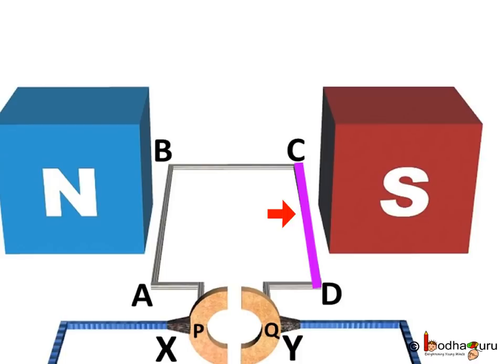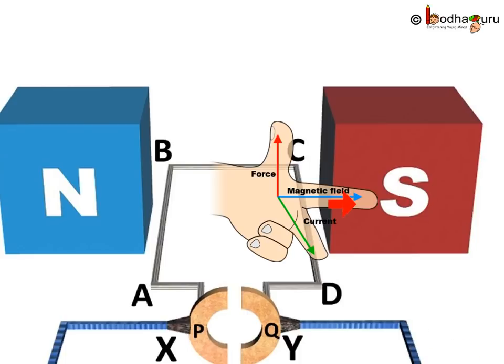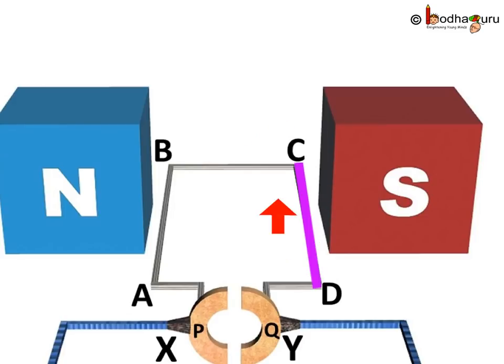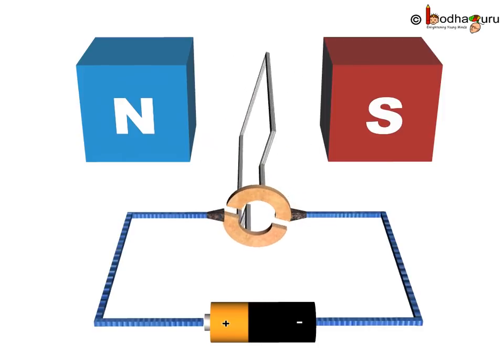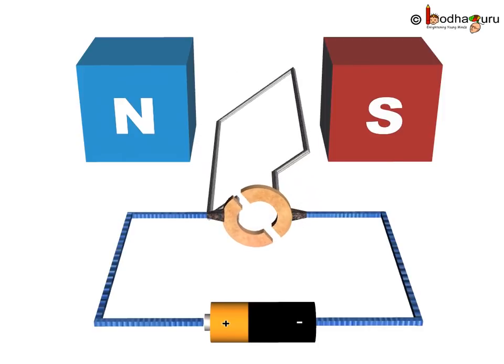Now, coming to arm CD. Look, the index finger points to the magnetic field direction which is north to south pole. The middle finger points to the current direction in the arm CD. So, the thumb will point to the direction of the movement of conductor and that is upward. So, we find that the force acting on arm CD pushes it upward. Thus, the coil and the axle mounted free to turn around an axis rotate anti-clockwise.